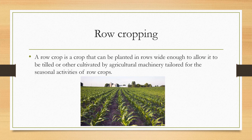Coming to row cropping, if you observe in the picture, the crop has been grown in a row-wise manner, making sure that the crop will be tilled enough and cultivated by agriculture machinery tailored for the seasonal activities of row crops. This is the example for row cropping.